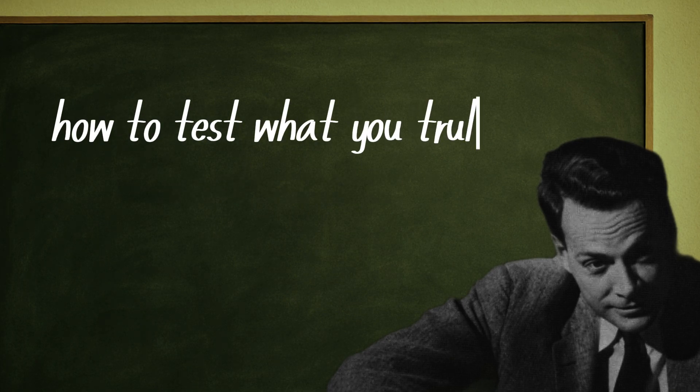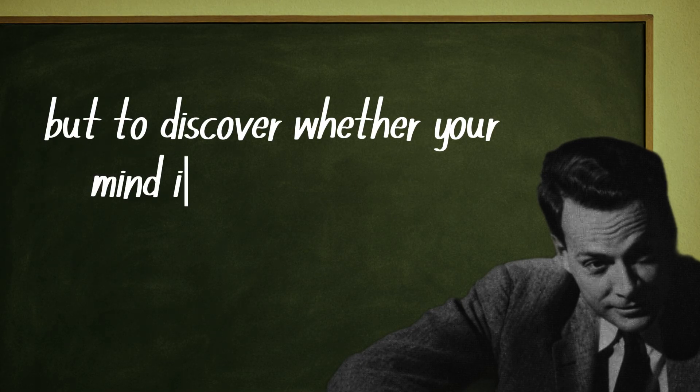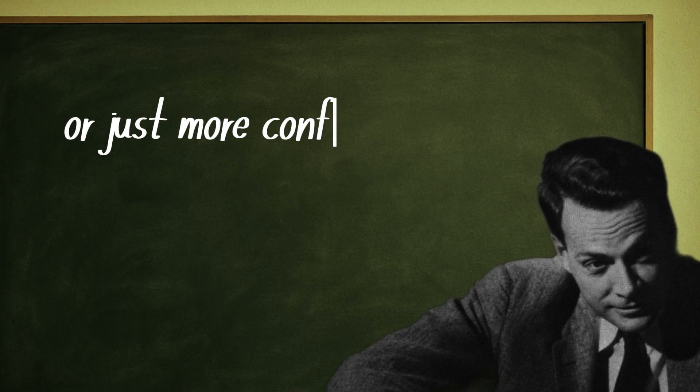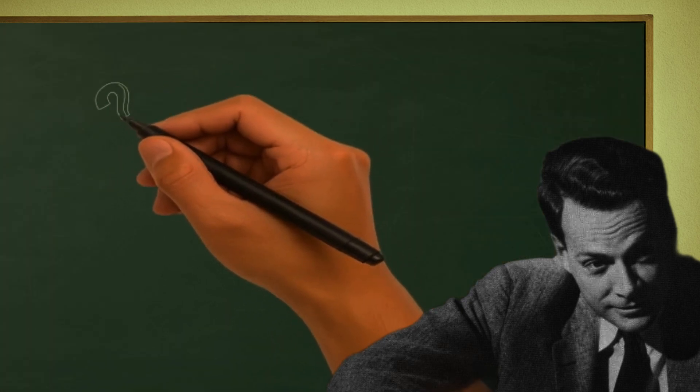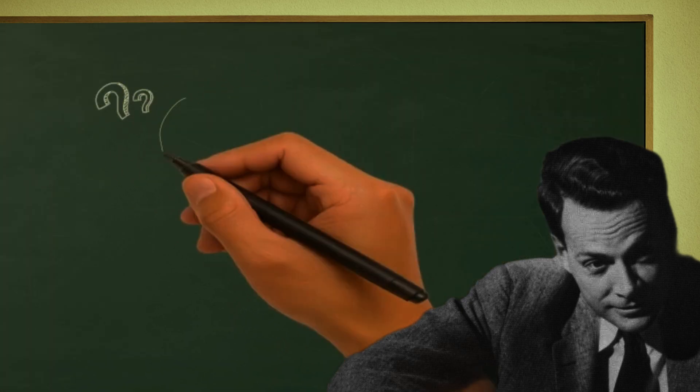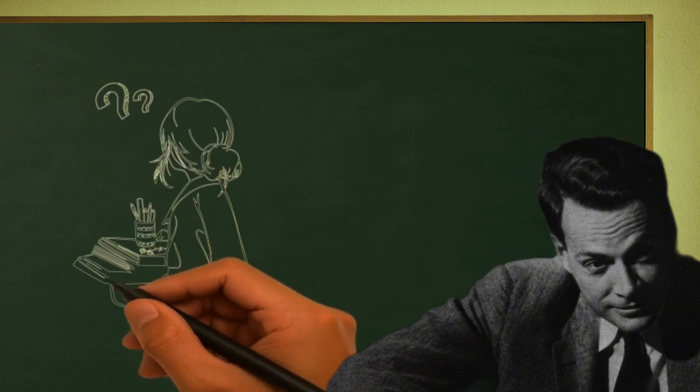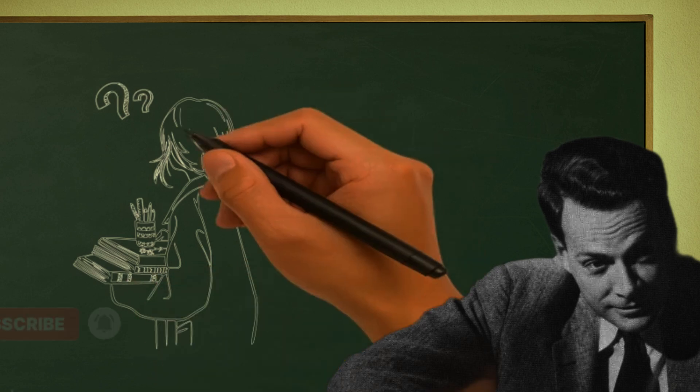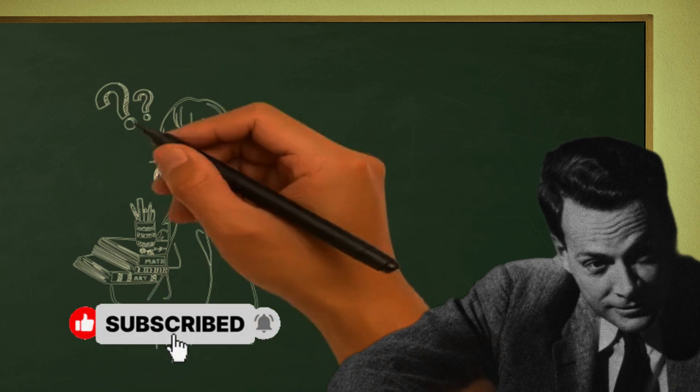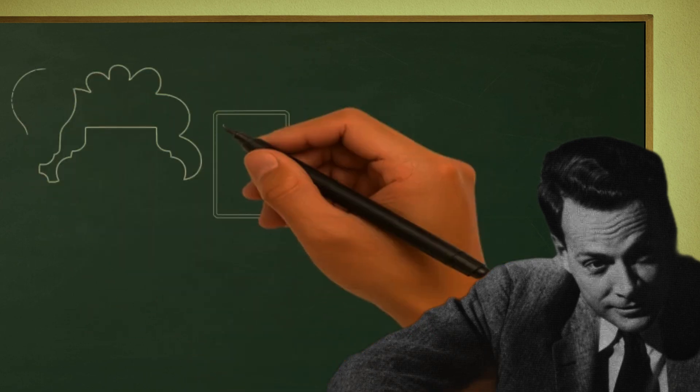Now imagine this simple scene: you study, you understand, you think you know. And then someone asks a question, and suddenly what felt solid collapses. That's the moment your brain reveals the truth. You didn't really learn, you only recognized the content. And that's why the third principle of a genius mind is the testing effect.